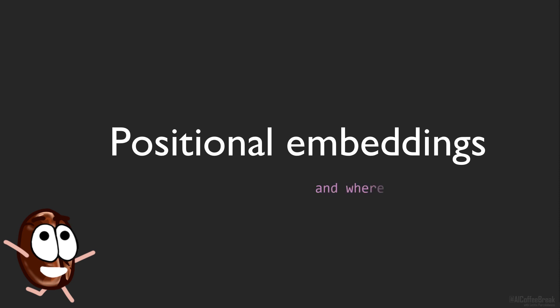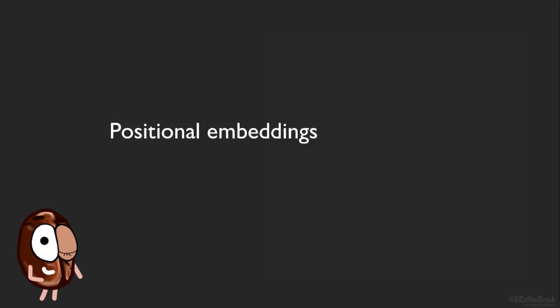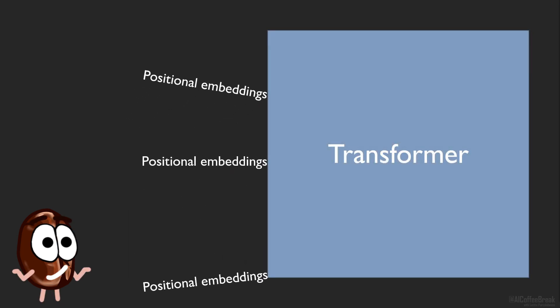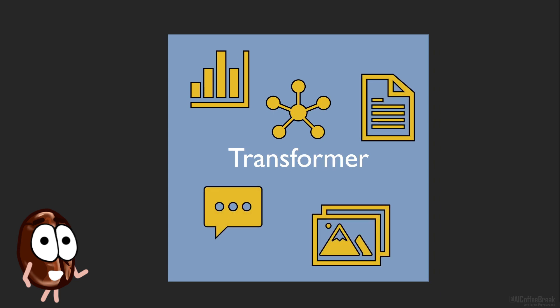Hello there! Today we are going to talk about positional embeddings. You should have heard of them because wherever you see a transformer neural network, you also see positional embeddings attached to them. And because transformers are now really everywhere in machine learning, irrespectively of the data type, you should have come across positional embeddings already.